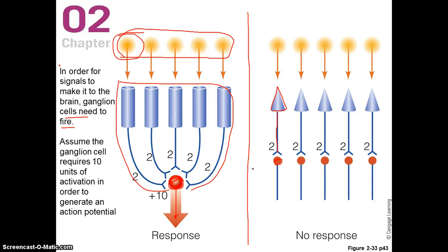We're back talking about differences between rods and cones in terms of convergence in the retina. There's really a lot of convergence in general in the retina, but there's more convergence for the rods than there is for the cones.